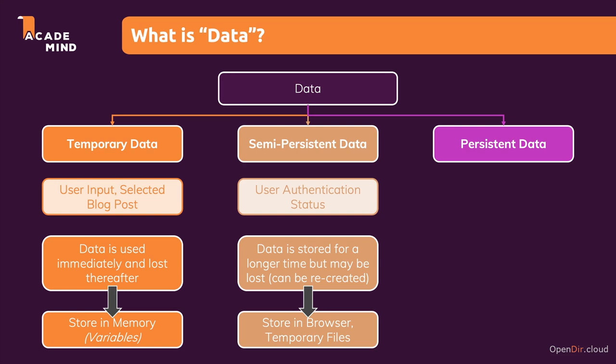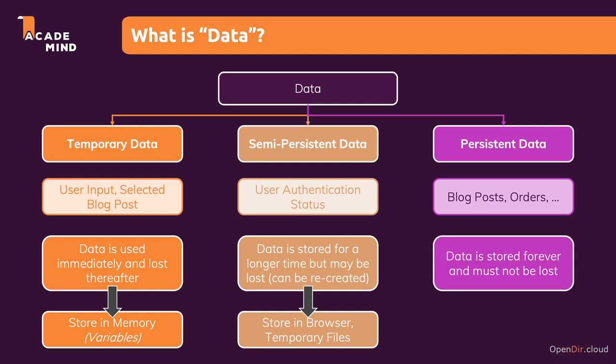In most websites we're building, we also have real persistent data — data which must not be lost and which should never be cleared unless we explicitly want to delete it. Examples would be blog posts, orders, products, users, and so on. There's a long list of data which makes up the heart of our website. For example, an online shop is all about products and orders, and this data must be stored forever. It must not be lost unless we explicitly want to delete one item — like canceling an order — but it shouldn't be auto-deleted randomly.